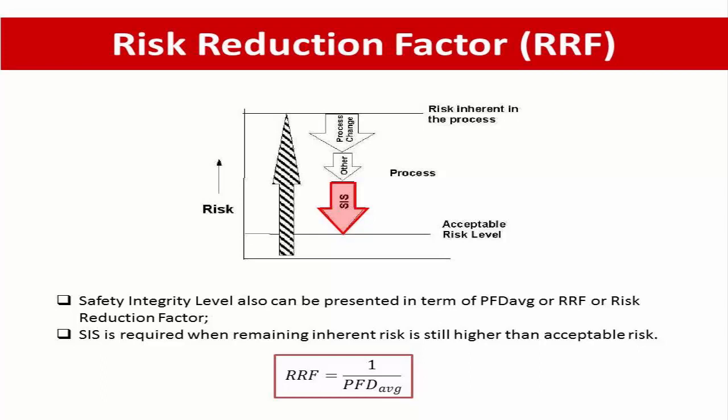This picture shows that from the left side, the process risk is too high due to inherent risks in the process. It can be reduced by means of outer layers of protection, but the remaining inherent risk is still higher than the acceptable risk level, so a SIS must be added.